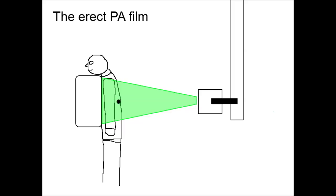Because the x-ray beam is divergent and cone-shaped, objects at the back of the chest will appear larger and more translucent than objects at the front. Because of the direction of beam travel, dense objects at the back may hide objects that are more anterior.